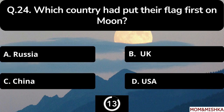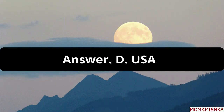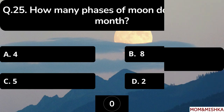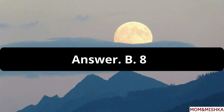Which country put their flag first on the moon? It's USA, option D. How many phases of the moon do we see in a month? We see 8 phases, option B.